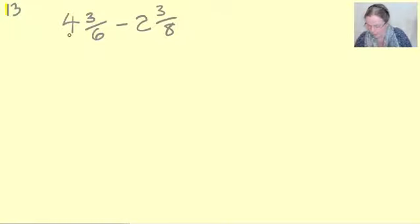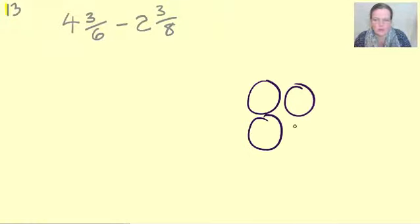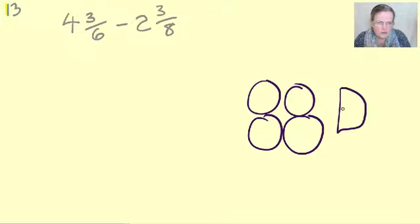Right, off we go. Number 13. We've got 4 and 3/6 take away 2 and 3/8. Let's have a quick look at how that looks: one, two, three, four, take away 3/8. And three sixths, so we know that 3/6 is a half, don't we?